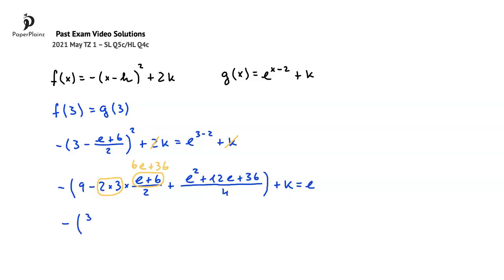Therefore, we get 36 over 4 for 9, minus 12e plus 72 over 4, plus e squared plus 12e plus 36 over 4. We still have plus k here, and e on the right-hand side.